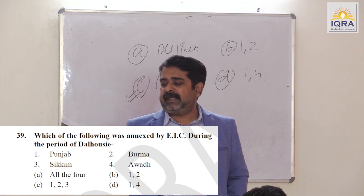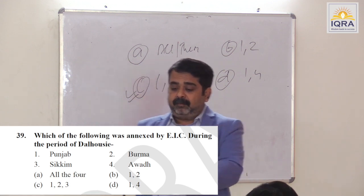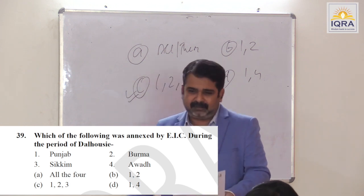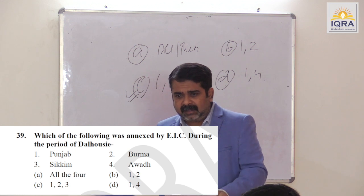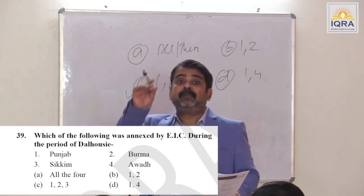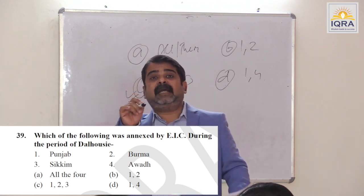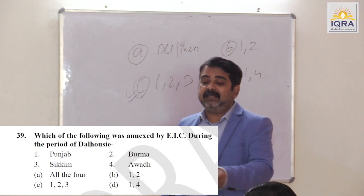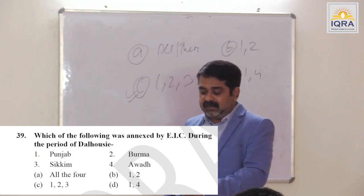Which of the following was annexed by EIC during the period of Dalhousie? Punjab, Burma, Sikkim — directly annexed. Awadh was annexed on grounds of maladministration — not through doctrine of lapse. Wajid Ali Shah was the ruler. Punjab, Sikkim, and Burma were annexed; Awadh was annexed on grounds of maladministration. Answer is A.